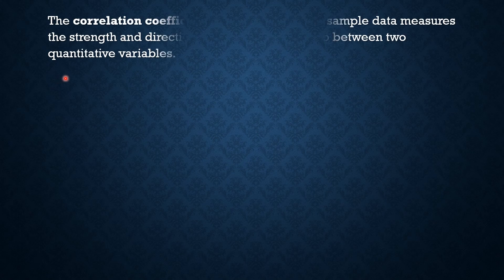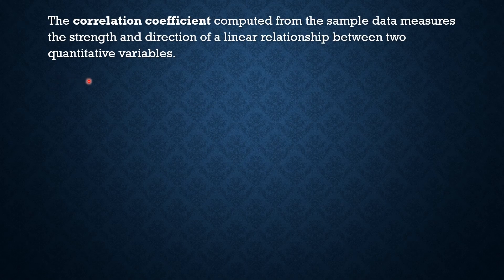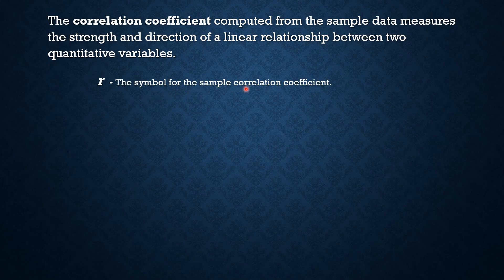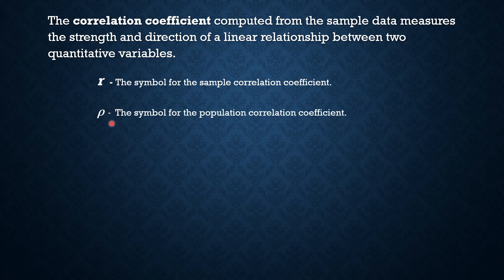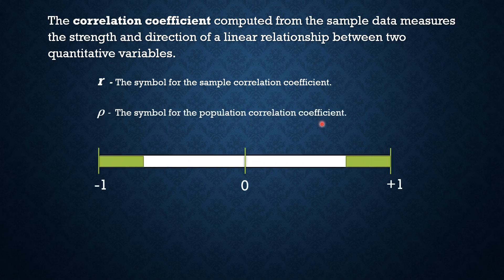The correlation coefficient computed from the sample data measures the strength and direction of a linear relationship between two quantitative variables. We use the symbol R for the sample correlation coefficient, and also R for the population correlation coefficient.